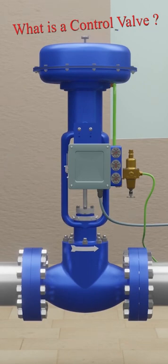An I/P converter, which is a current-to-pressure converter, will convert electrical signal into pneumatic force.